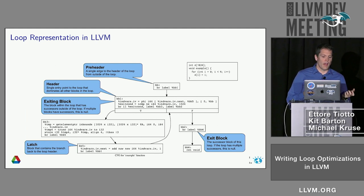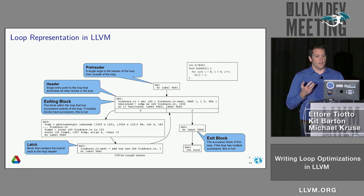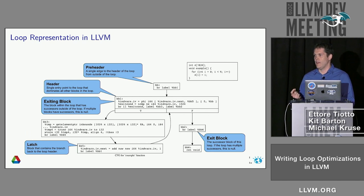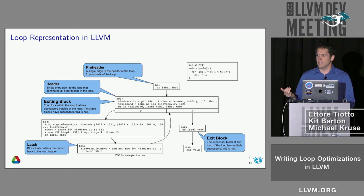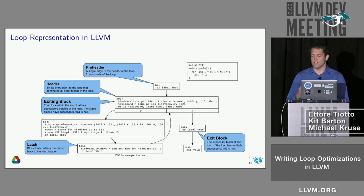There are two forms of the APIs: get exit block and get exit blocks, and get exiting block and get exiting blocks — one is the plural form of the other. If there is a single exiting block and a single exit block, the non-plural forms return that block and the plural forms return null. If you've got multiple exiting or exit blocks, the plural form gives you the list of blocks. This is a way to easily tell whether your loops have a single or multiple exit or exiting blocks.